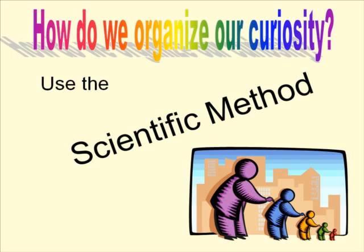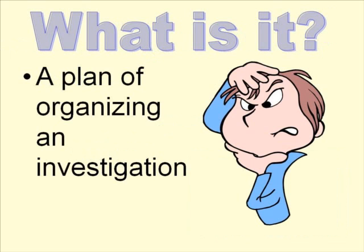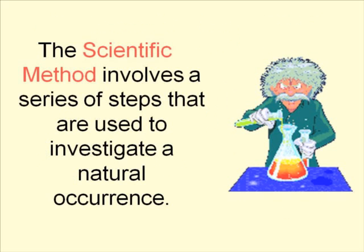How do we organize this curiosity? We use the scientific method. All scientists do this. Depending on what they're studying, they apply the scientific method a little differently, but they all basically follow the same series of steps. The scientific method is a plan for organizing an investigation — it involves a series of steps used to investigate a natural occurrence. Science is the study of natural things, so the scientific method is the steps we use to solve problems and observe nature.